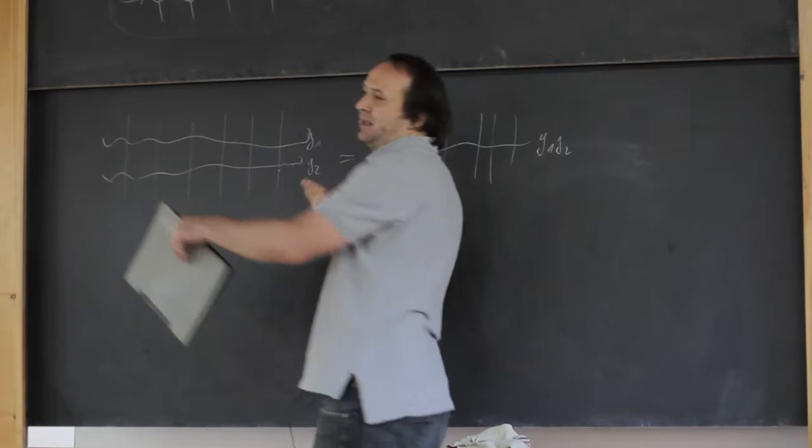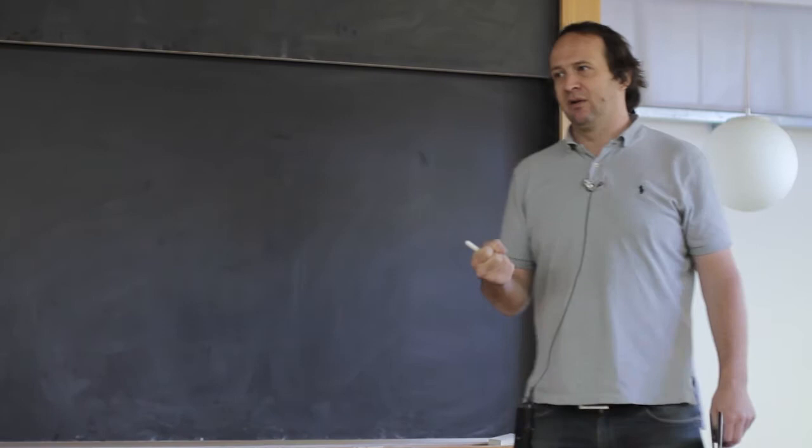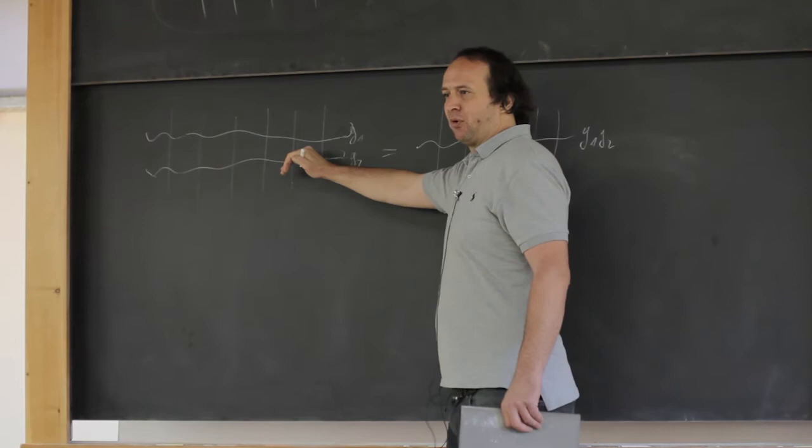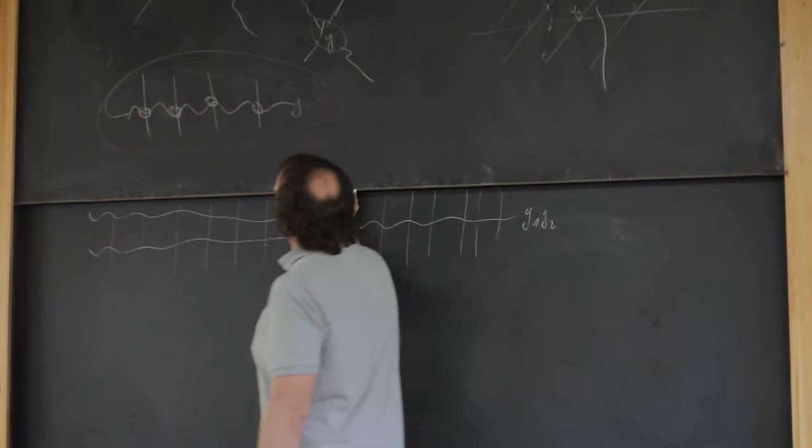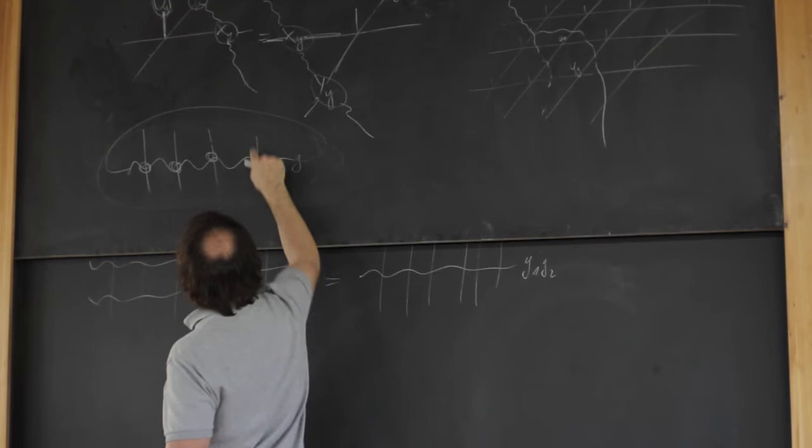This gives the full classification of all SPT phases. The question: given a group, find all possible matrix product operators that form a representation of this group. A matrix product state has indices only below, but a matrix product operator has indices both below and above — that's why it's called an operator instead of a vector.